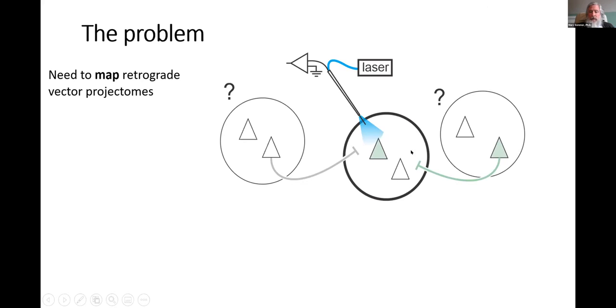Overall, our situation is like this. We may inject a vector into an area, we get okay transduction and expression but not necessarily optimal. If it's a retrograde vector, it may label projection neurons in other brain areas or it may not. We don't know for sure. A lot of this is unknown.